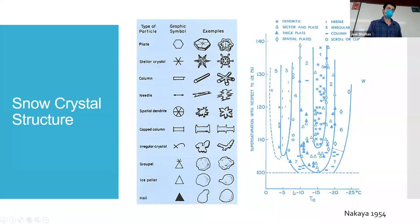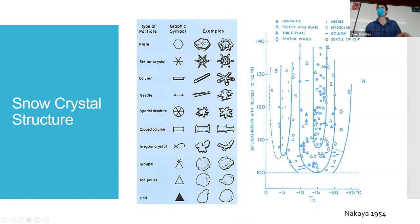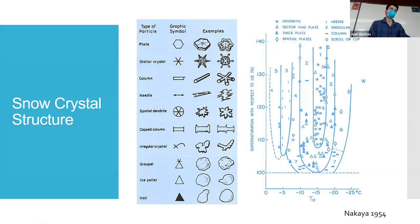A diagram shows temperature on the x-axis and supersaturation on the y-axis. Different conditions lead to different kinds of snow — that's why you have drier snow, lighter snow. It depends on the kind of moisture in the air, how cold it is, and how supersaturated it is.